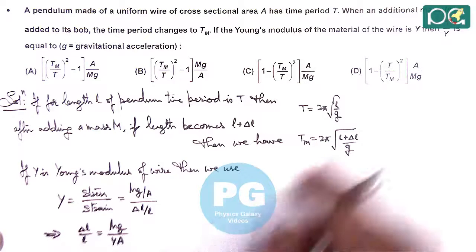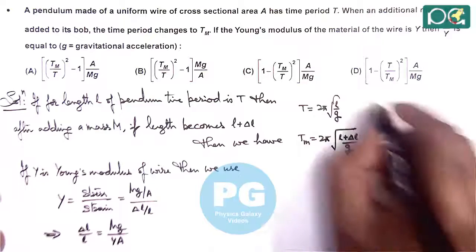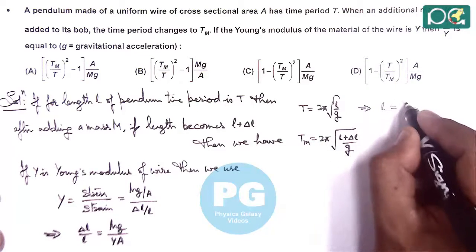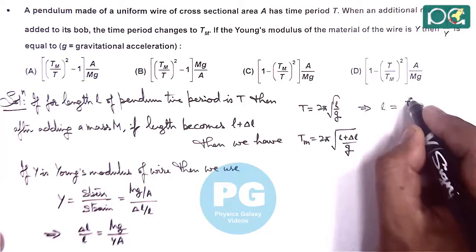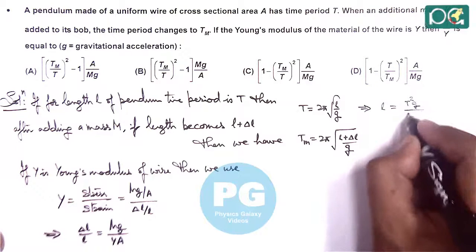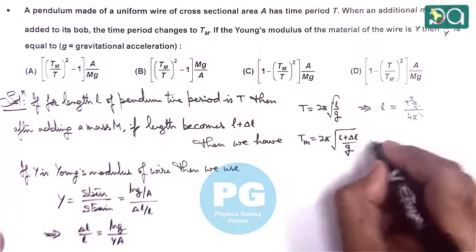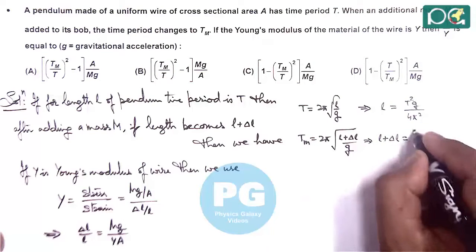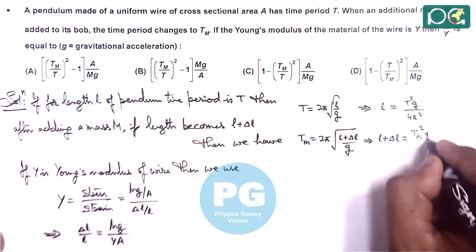And from here, we can eliminate delta L/L, where the value of L we are getting is T²g/4π², and here we are getting L plus delta L equals Tm²g/4π².